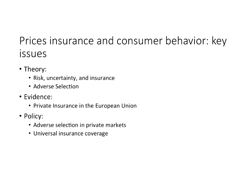After the demand for care we moved to prices, insurance, and consumer behavior. The key issues covered were the theory of insurance and risk, uncertainty and insurance. We talked about adverse selection, some evidence, private insurance in the European Union, some evidence from Obamacare, and in policy we talked about adverse selection in private markets and how universal insurance can address it.